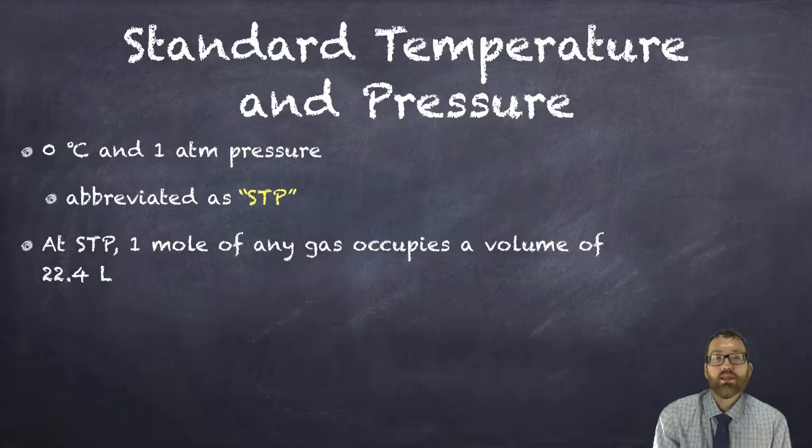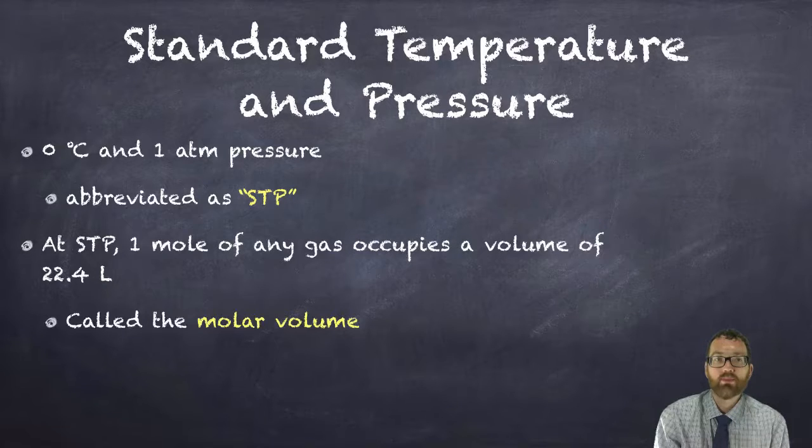So the interesting thing about gases is that at STP, one mole of any gas occupies a volume of 22.4 liters. It doesn't matter what gas it is. But if you're at those same conditions, any gas, it doesn't matter which one you have, takes up 22.4 liters of space. So this is called molar volume.